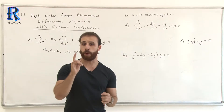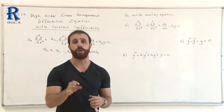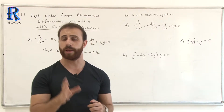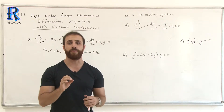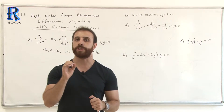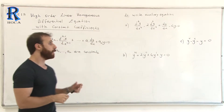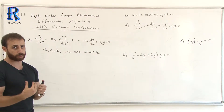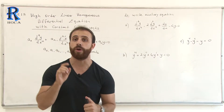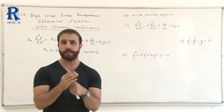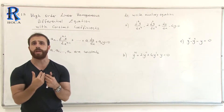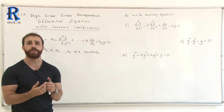We have a topic called high order linear homogeneous differential equation with constant coefficients. The importance of this topic is that the coefficients must be constant. If the coefficients are constant, we can use directly the auxiliary equation, also called the characteristic equation.